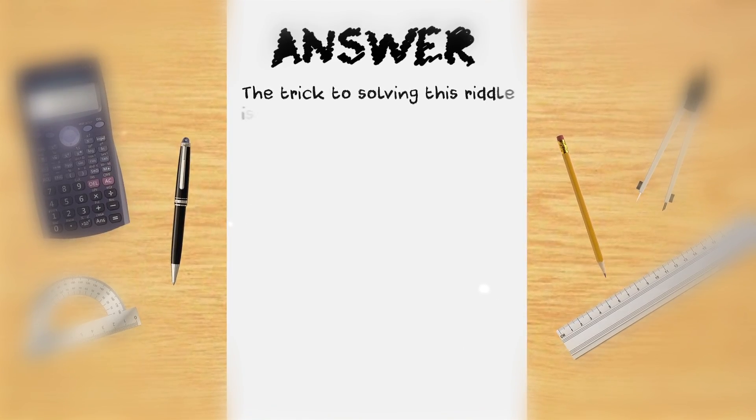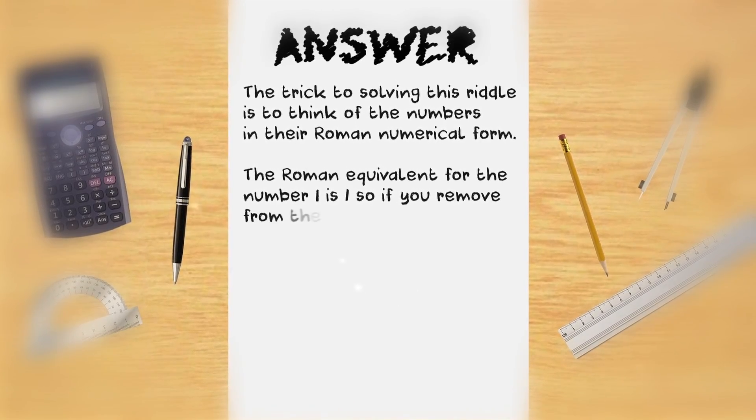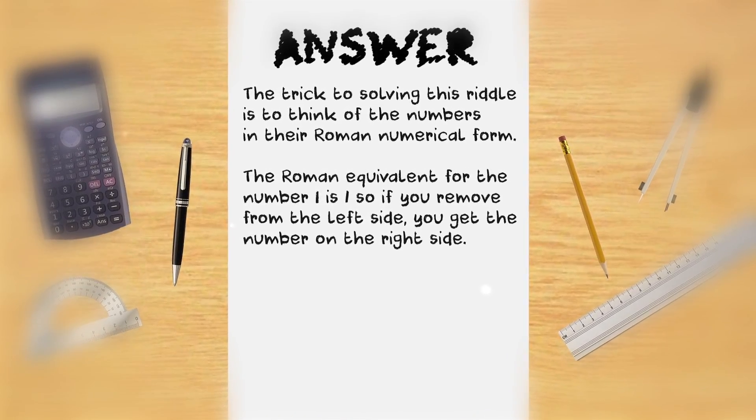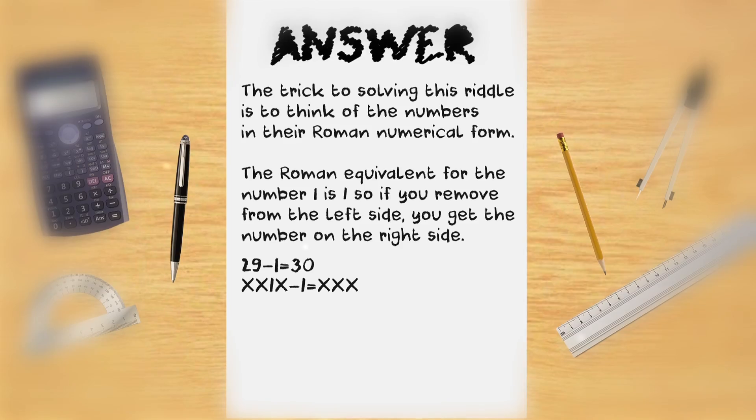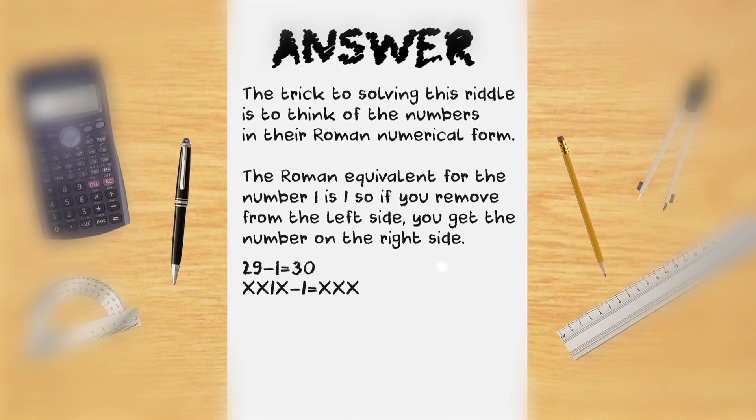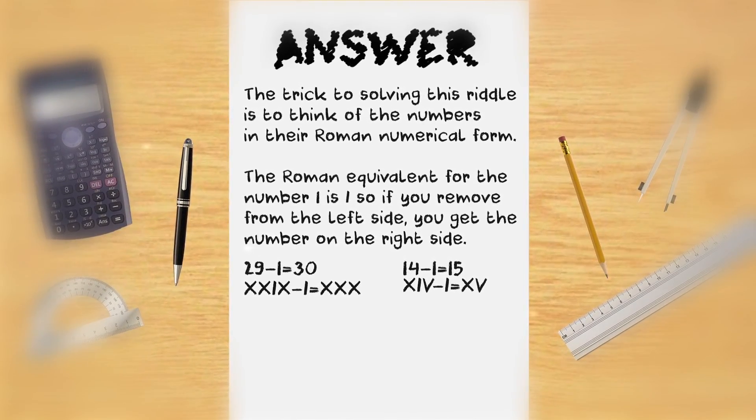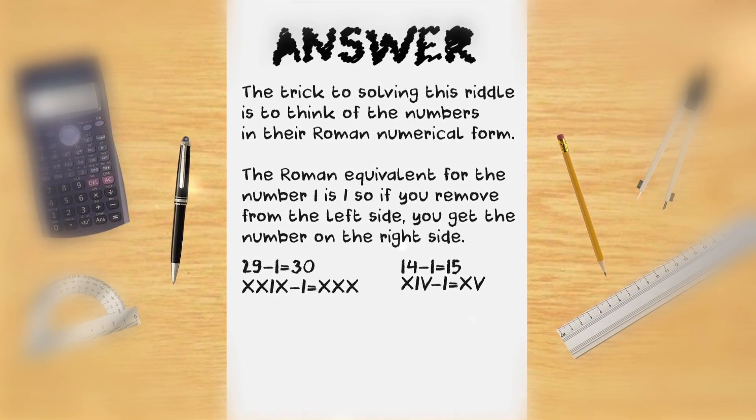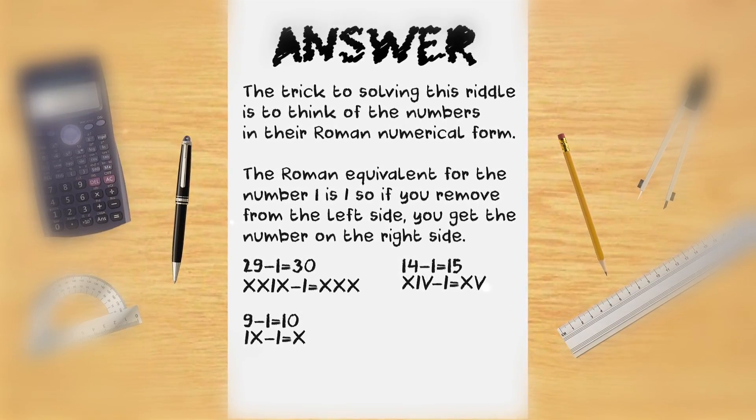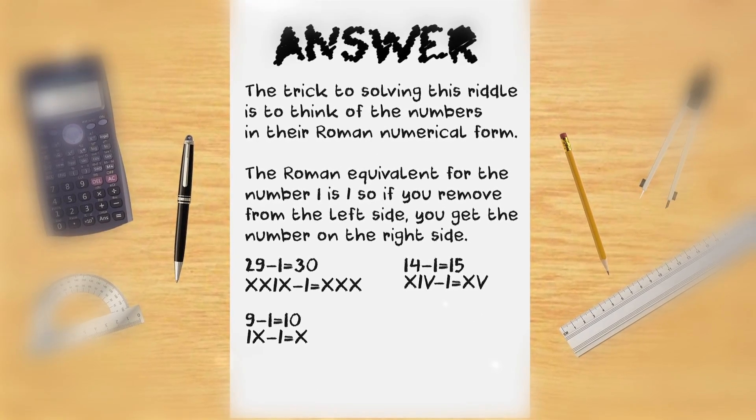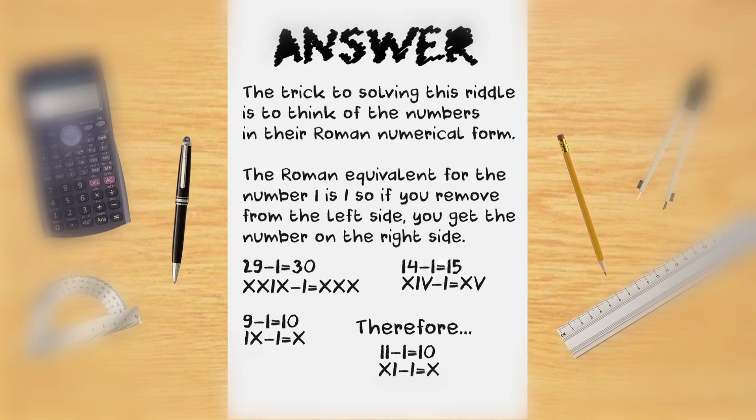Answer. The trick to solving this math riddle is to think of the numbers in their Roman numeral form. The Roman equivalent for the number 1 is I. So if you remove I from the left side, you get the number on the right side. For example, 29-1 equals 30 works out as XXIX minus I which equals XXX or in normal numbers 30. 14-1 equals 15 in Roman numerals is XIV minus I which then comes out to XV or 15. 9-1 equals 10 works out in Roman numerals as IX minus I equals X or 10. Therefore, 11-1 equals 10 is XI minus I equals X which works out as 10.